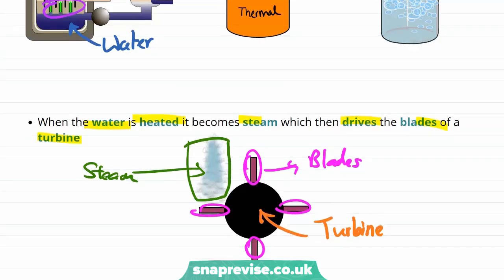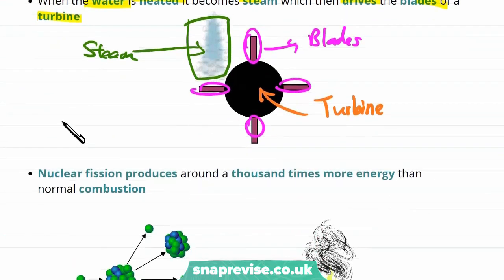But we already have lots of different methods of creating electricity, such as coal powered plants. So why are we interested in generating electricity in this way?